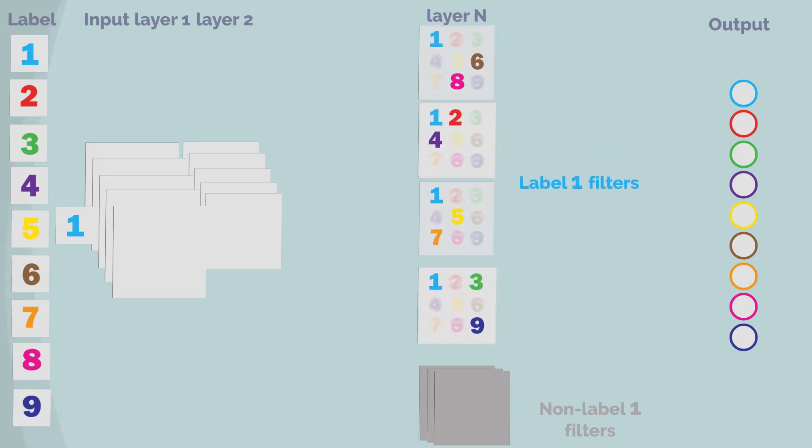Each one of the 150 filters have label 1 among their set of three labels. Each one of the 150 filters contribute to the output label 1. A total of 150.